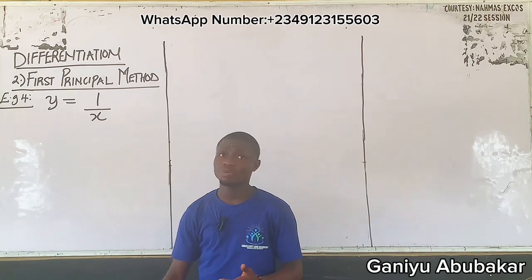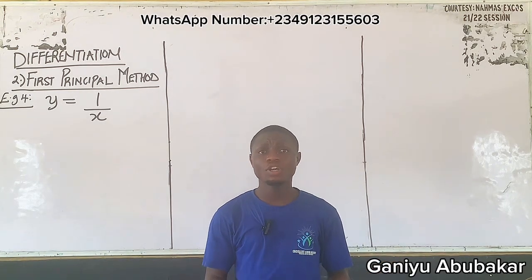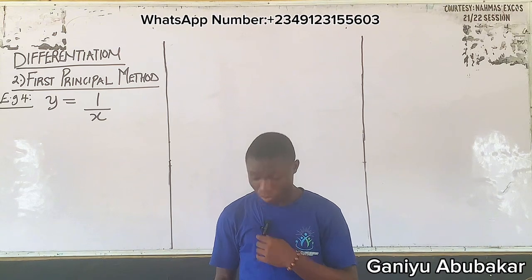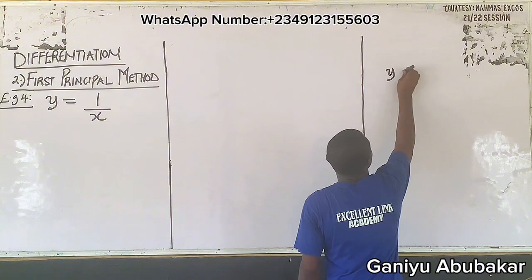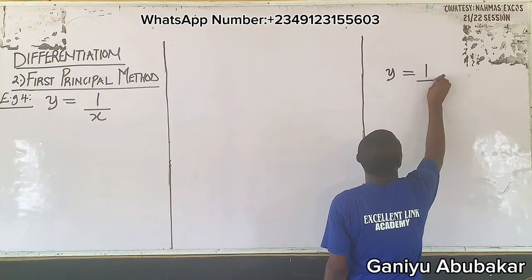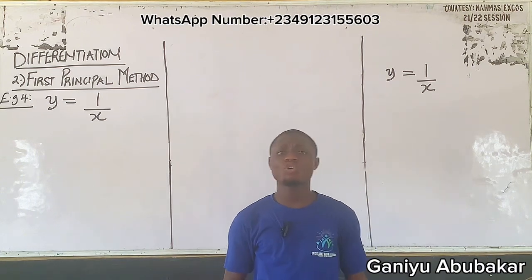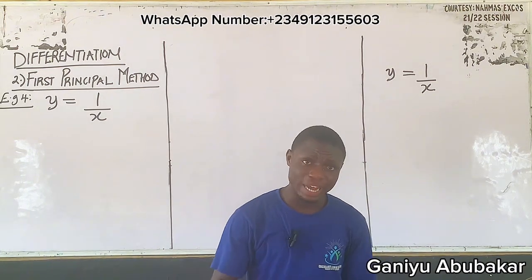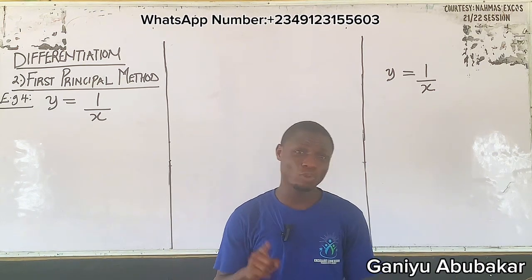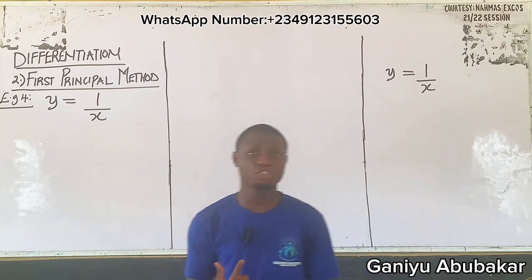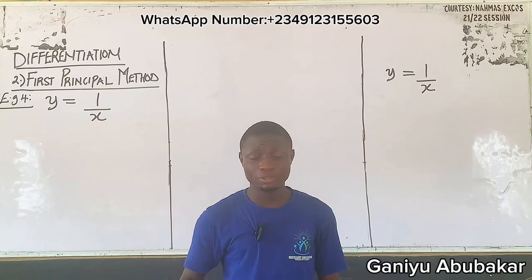Let's try using the general method first and see if our answer will be comparable. So let's say y is equal to 1 over x, and I want to solve this using our normal first method called the general method. At this level, to understand the method, I would advise going back to the first video on differentiation, which covers the general method.